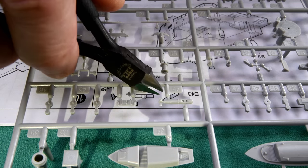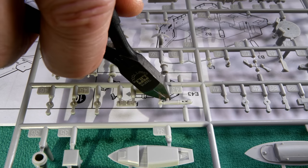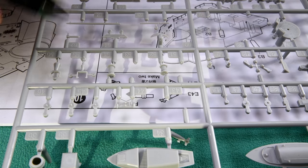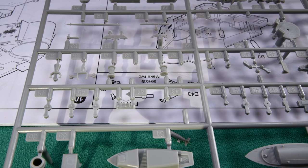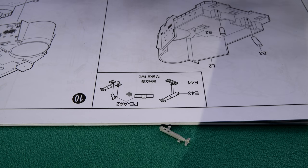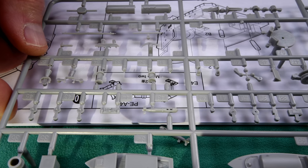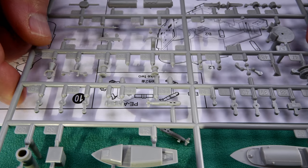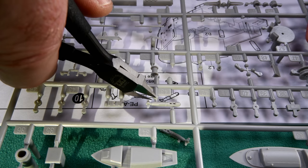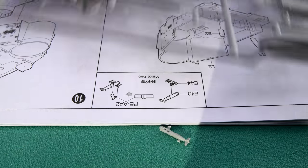We need two E43s. Now there's only one on each sprue. Good thing there's two sprues, right? Now we'll trim those out properly later.